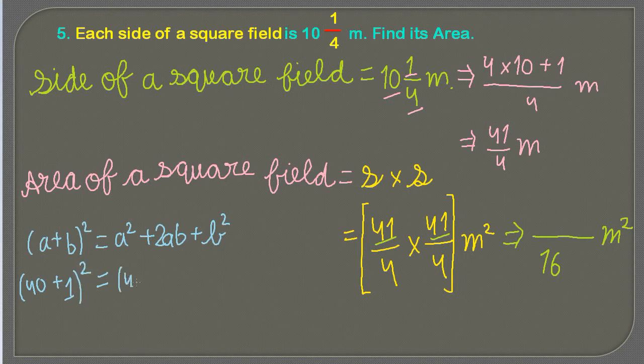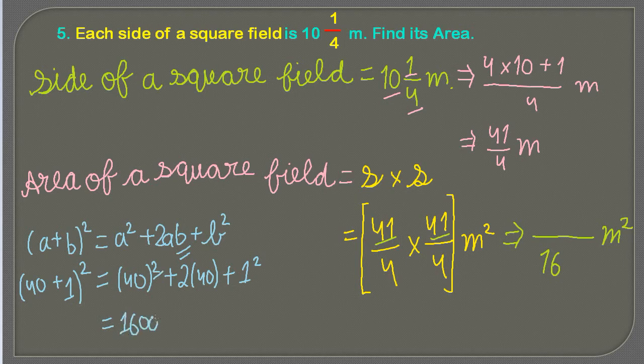That would be 40² plus 2 into 40 into 1 plus 1². 40 square meaning 40 into 40 that is 1600, 2 into 40 equals to 80, and 1 square that is 1, which could be 1681.